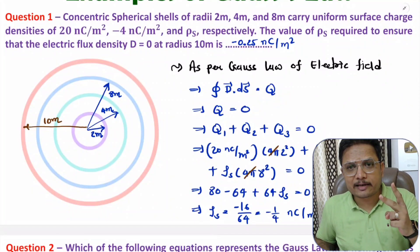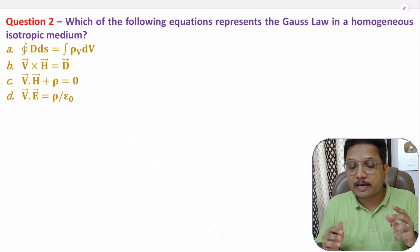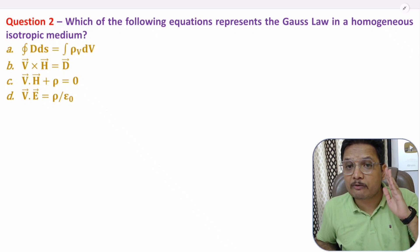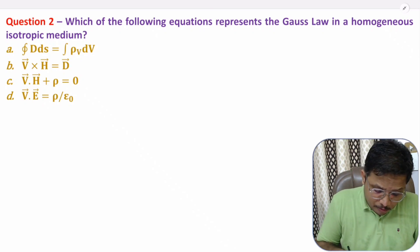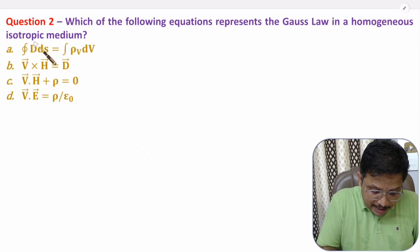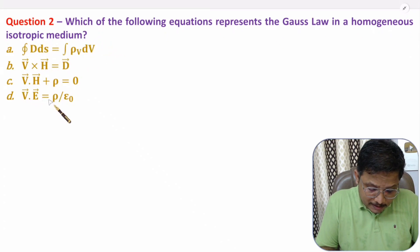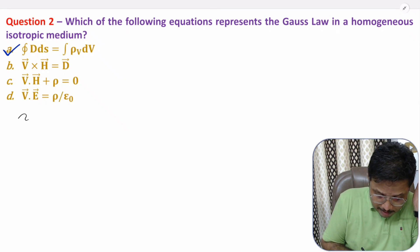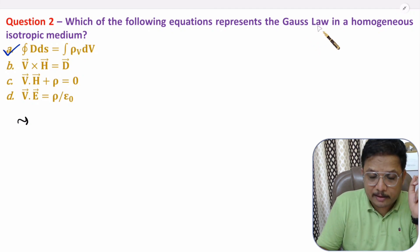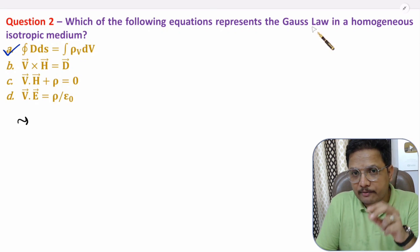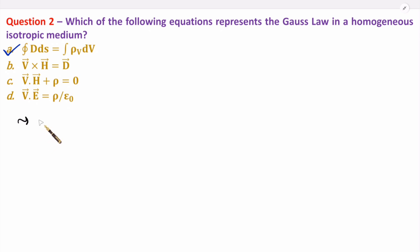Let us move on to the second interesting problem. This second question is based on Maxwell's first equation, and one should know Maxwell's first equation is based on Gauss's law of electric field. The question asks: which of the following equations represents Gauss's law in a homogeneous isotropic medium? There are two forms of Gauss's law with Maxwell's equation — one in integral form and one in differential or point form.